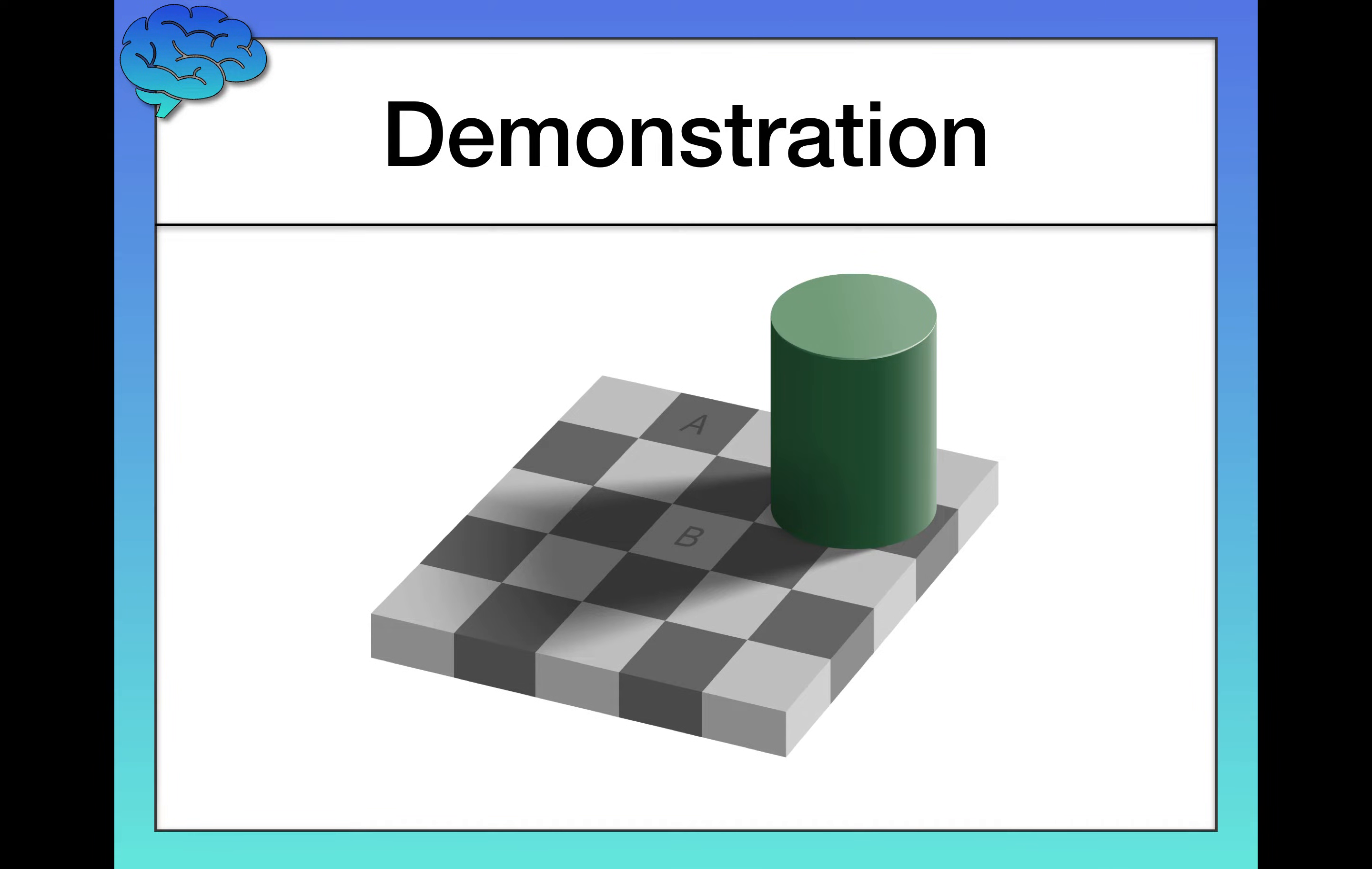Alright, here's an image and here's the question for you. What colors are A and B? I don't mean the actual letters A and B, I mean the boxes, the checkers that surround the letter.